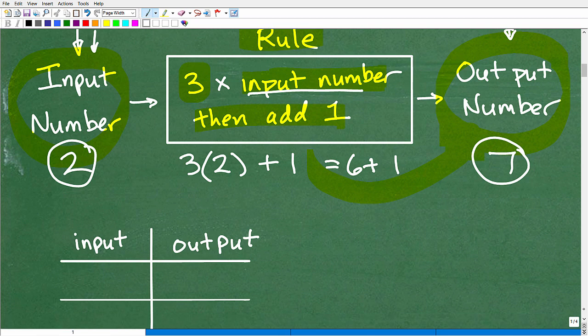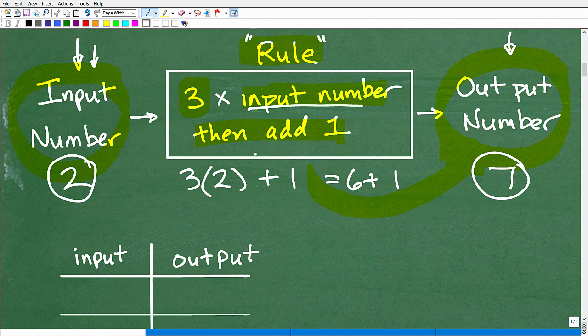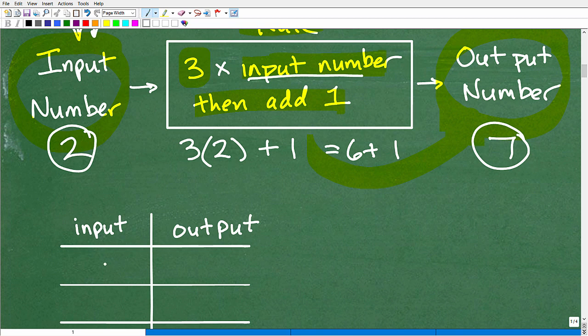All right. So for this particular function, a function is a specific math rule. Okay. It's a very specific math rule and you can have any kind of infinite number of different type of rules that you want. Okay. So let's make a little table here and we'll say for this particular function, I plugged in two and I got an output of seven.